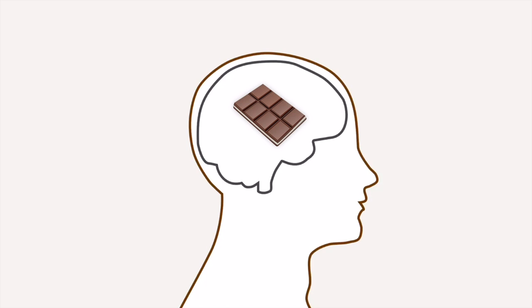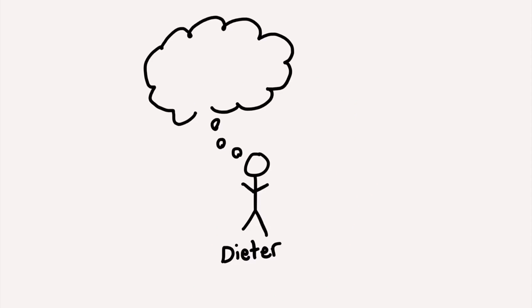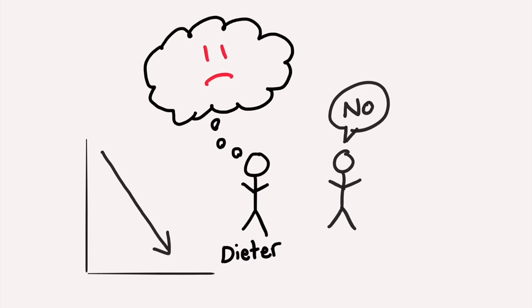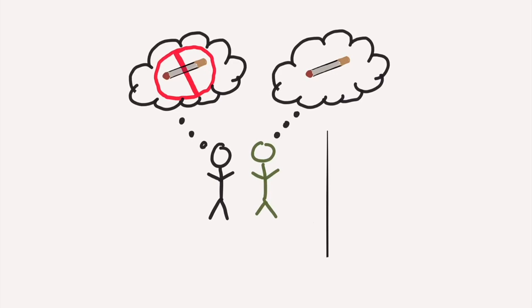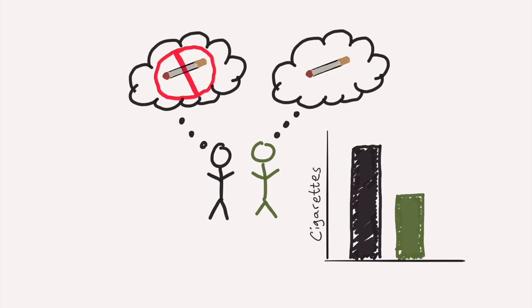Multiple studies have shown that when you try to suppress a certain thought, that thought actually becomes stronger. If you take dieters and tell them to not think about tempting food, their ability to withstand that food actually goes down. And the same thing can be seen with smokers. Smokers that are specifically told to not think about smoking a cigarette ended up smoking more cigarettes than other groups by the end of the study.